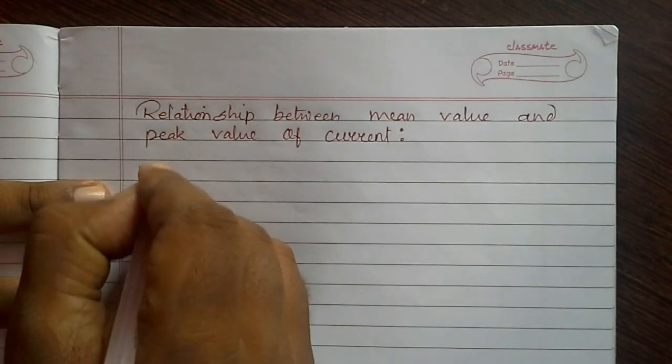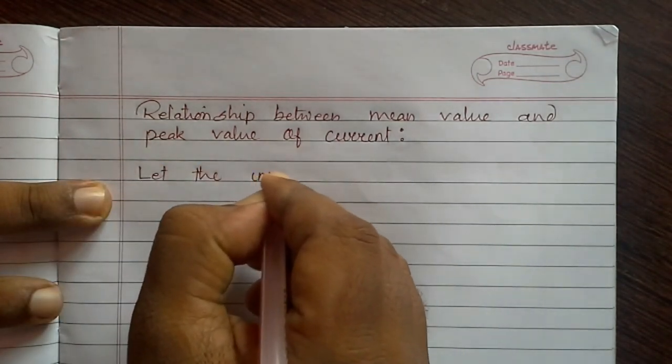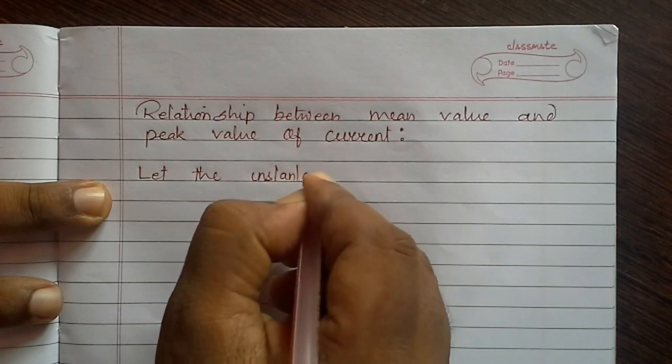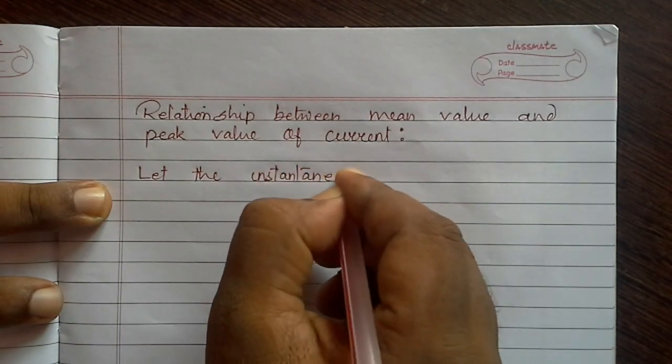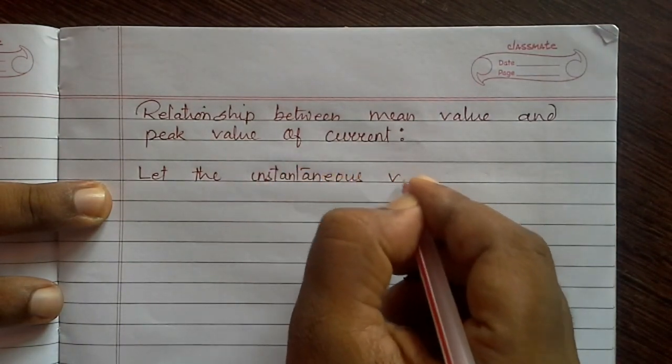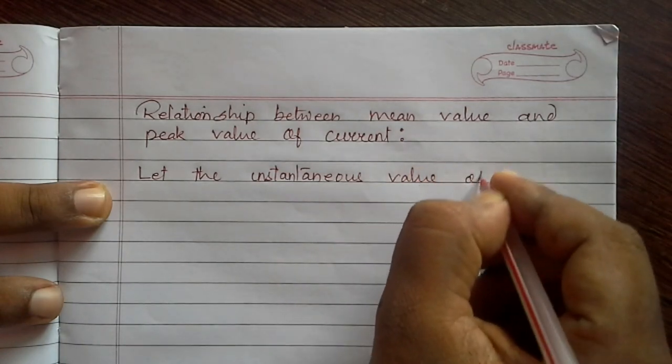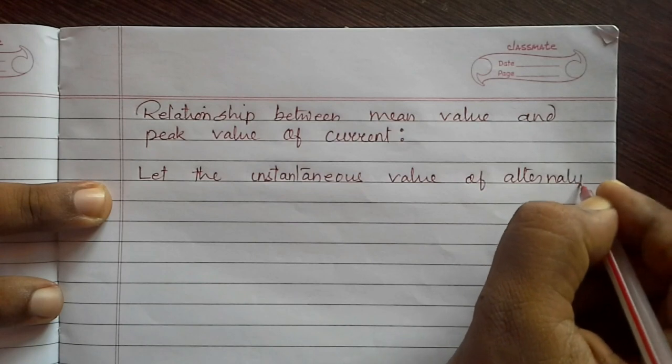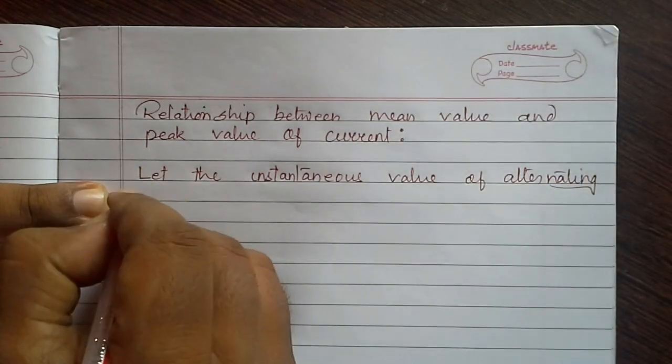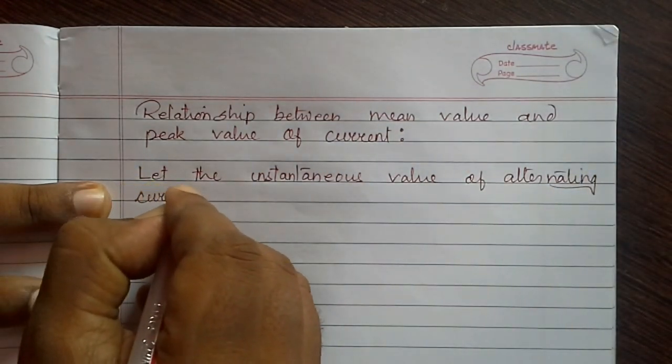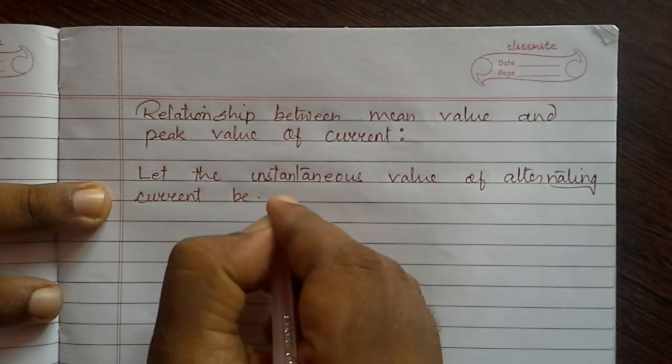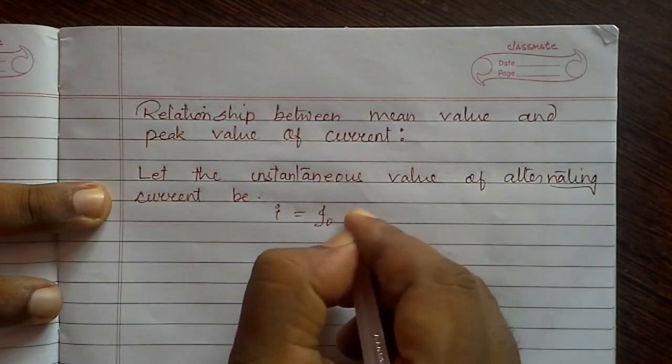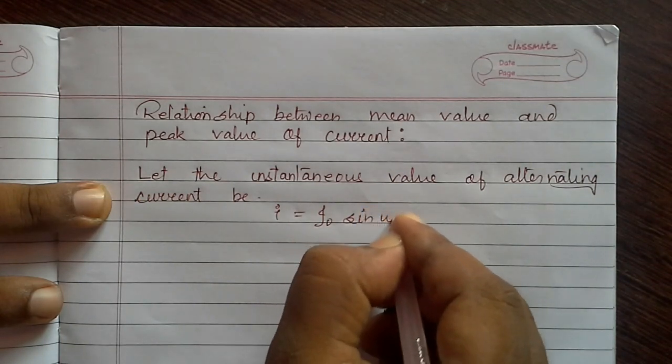Let the instantaneous value of alternating current be i equals i0 sin omega t, where i0 is the peak value of current.